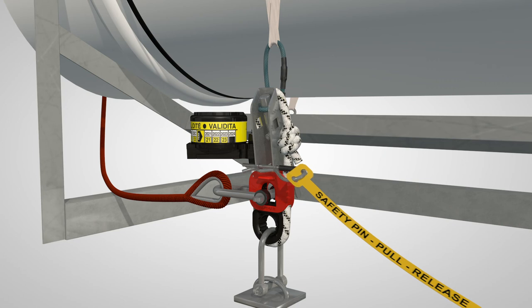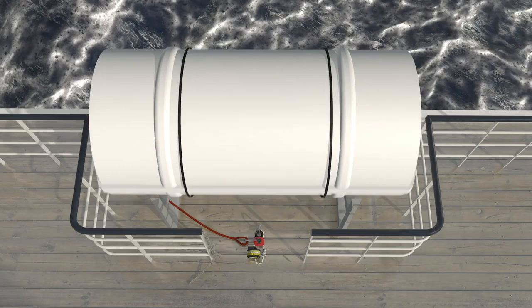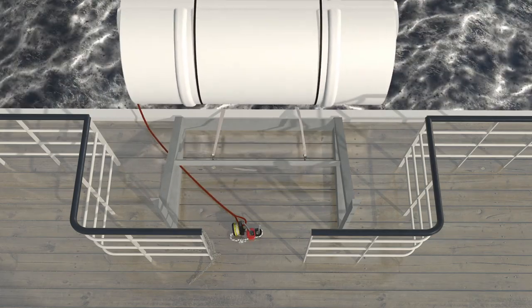To manually release the raft, pull out the safety pin and the lashing will be released, allowing the life raft to be launched in a controlled manner.